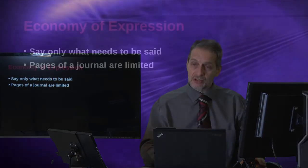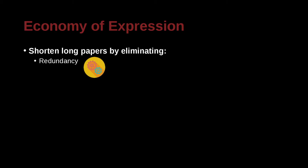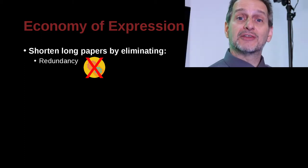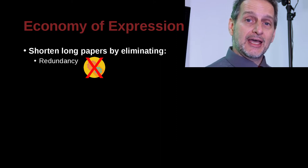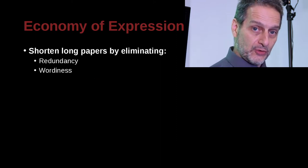So how can we get things shorter? You can try to eliminate redundancy — that is, repeating something. Don't say the same thing twice. Sometimes you want to make it very clear, so you say the same thing again, hoping the reader will understand it very clearly. But that's not true. One time is enough. You don't need to say it over and over.